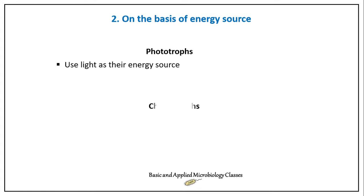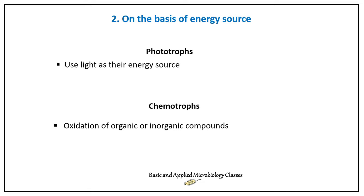Chemotrophs derive energy from chemical compounds — specifically from the oxidation of organic or inorganic compounds. They are dependent on chemicals for their energy source, which is why we call them chemotrophs. Most phototrophs include photosynthetic bacteria, while most chemotrophs are involved in elemental cycling in the environment.